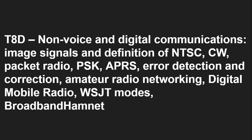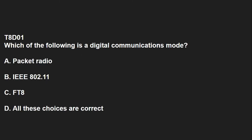T8D covers non-voice and digital communications, image signals, and the definition of NTSC, CW, packet radio, PSK, APRS, error detection and correction, amateur radio networking, digital mobile radio, WSJT modes, and broadband hamnet. T8D01: Which of the following is a digital communications mode? All of these are correct: packet radio, IEEE 802.11, and FT8 are all digital modes. T8D02: What is a talk group on a digital repeater? It's a way for groups of users to share a channel at the same time without hearing other users on the channel.